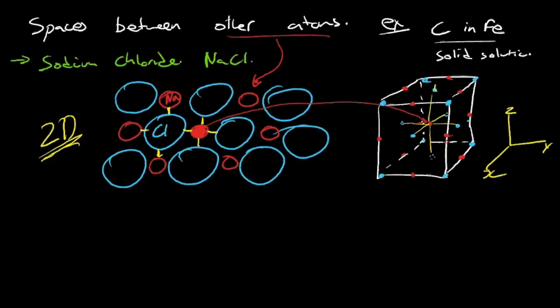So how many is it touching? It's touching 1, 2, 3, 4, 5, 6. So we find that we have what we call a coordination number. That is the number of atoms touching a given atom. Coordination number of 6.